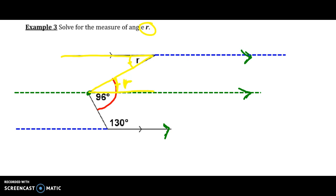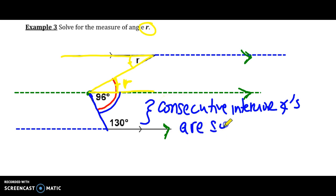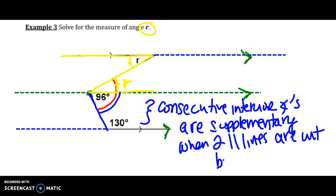I'm going to look at that other transversal we have going on here. We have 130, but we don't have this piece of the 96-degree angle. However, right here we have consecutive interior angles, which because these two lines are parallel, are supplementary, not congruent. Supplementary. When two parallel lines are cut by a transversal. If they weren't cut by a transversal, we would not know any relationship between these two angles here.